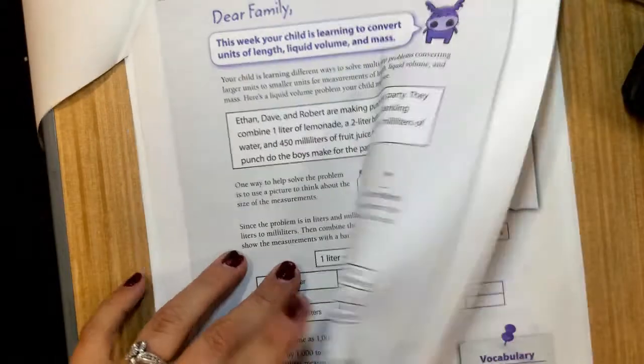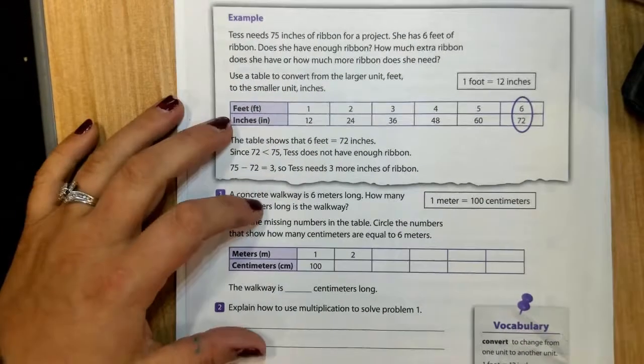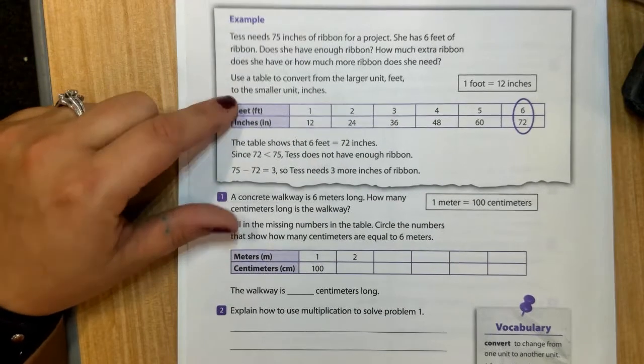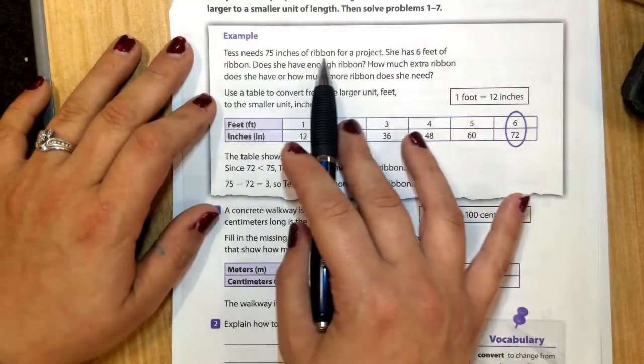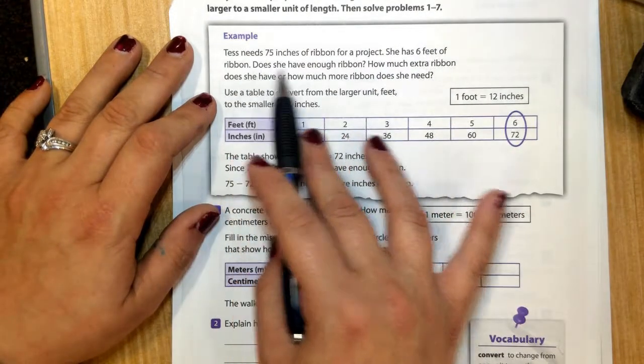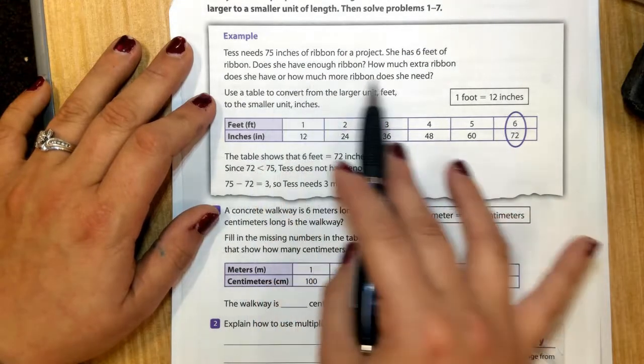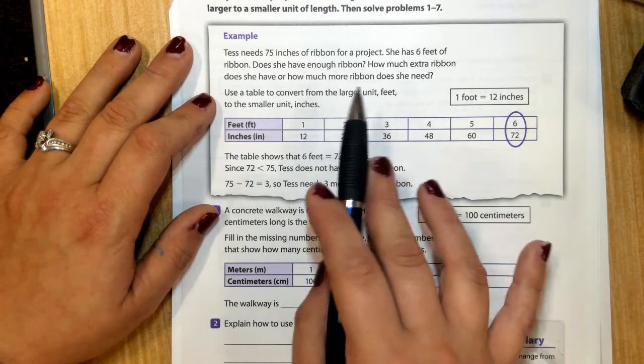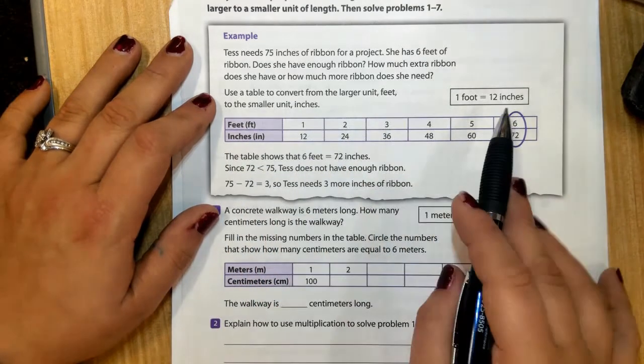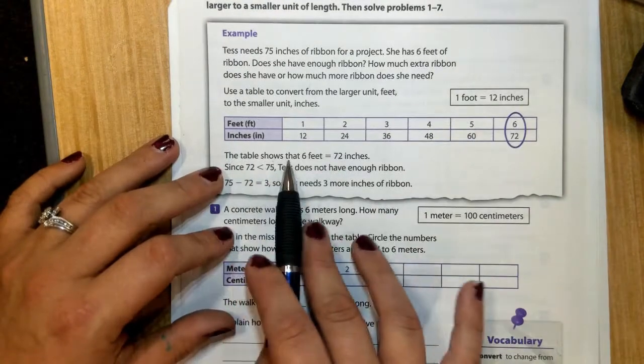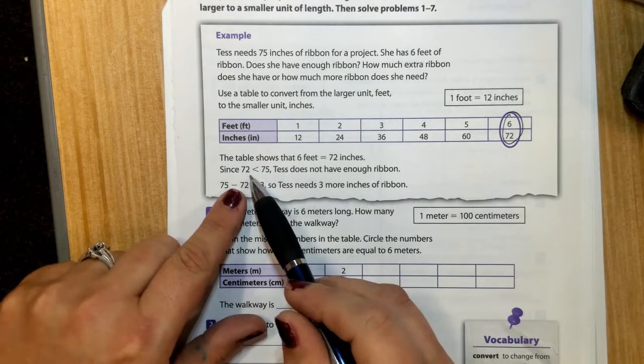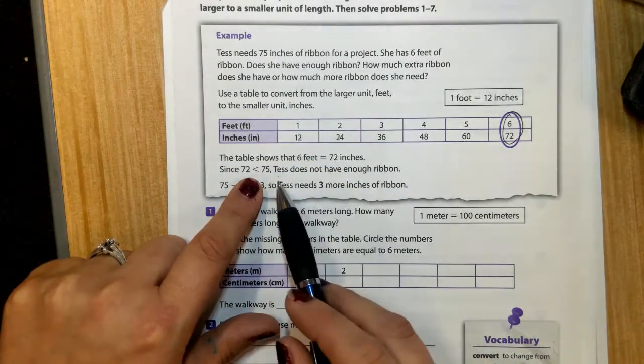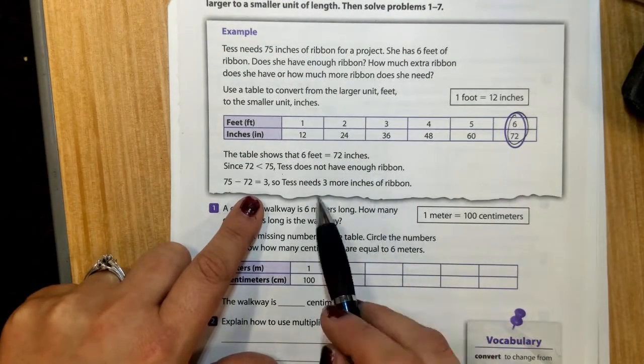All right, so that's the instructional. Let's go to the practice. This is page 269 inside your practice book. You see you have your example here. This is showing feet and inches, which is a great chart. Tess needs 75 inches of ribbon for a project. She has 6 feet of ribbon. Does she have enough ribbon? The table shows that 6 feet is the same as 72 inches. Since 72 is less than 75, Tess does not have enough ribbon. She needs 3 more inches of ribbon.